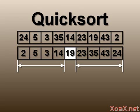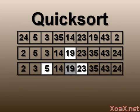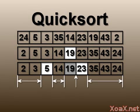Next, we partition each of these sets. The two new pivots 5 and 23 are shown in white, and the old pivot 19 in gray. After partitioning these two sets, we have a partition containing the elements 2 and 3, a partition containing the element 14, a partition between the elements 19 and 23 which contains no elements, and a partition of the elements 35, 43, and 24. We do not need to partition sets of size 0 or 1, since they are already sorted.